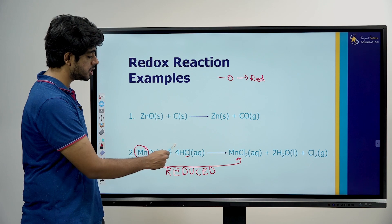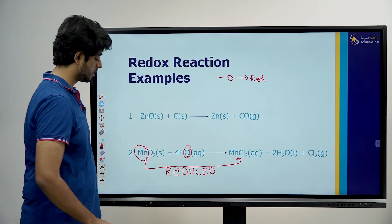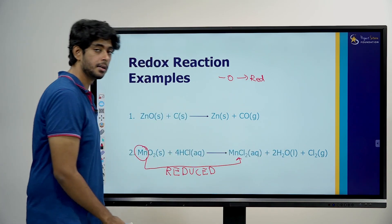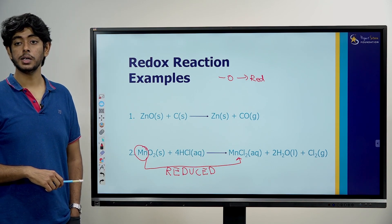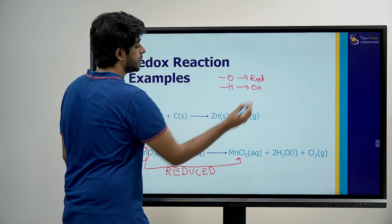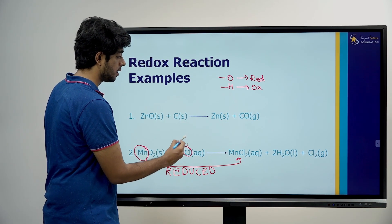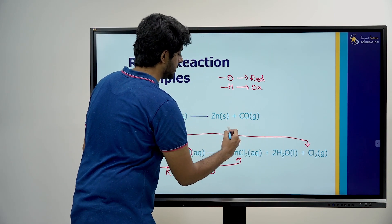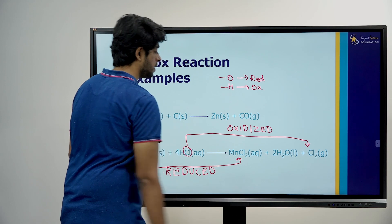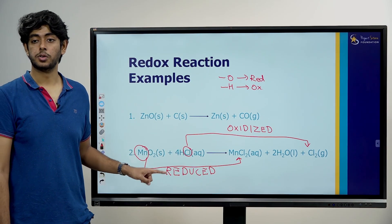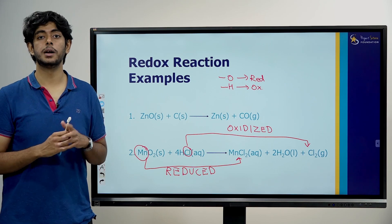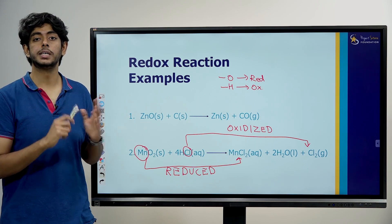Now chlorine: chlorine was with hydrogen in HCl, but later Cl2 is formed. So hydrogen was removed from chlorine. Removal of hydrogen is what I call oxidation. So chlorine was oxidized. In one reaction we see both reduction and oxidation, so these are redox reactions.